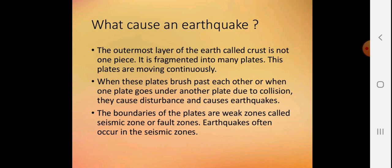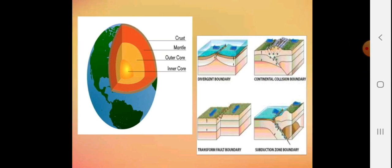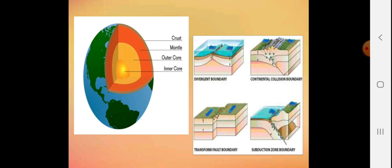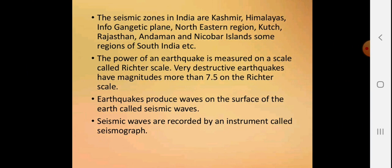What causes an earthquake? The outermost layer of earth's crust is not one piece. It is fragmented into many plates. These plates are moving continuously. When these plates brush apart, or when one plate goes under another plate due to collision, they cause disturbance and cause earthquakes. The boundaries of plates are weak zones called seismic zones. Earthquakes often occur in seismic zones. You can see in the figure the outer zones, inner zones, and crust, and how the earthquake takes place between the seismic zones. The seismic zones in India are Kashmir, Himalaya, northeastern region, Kutch, Rajasthan, and Andaman and Nicobar Islands, and some regions of south India as well.